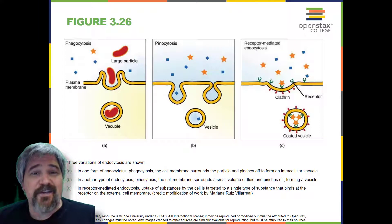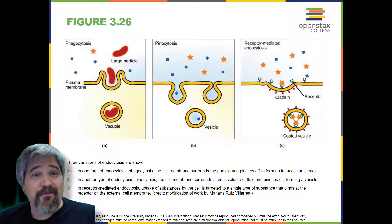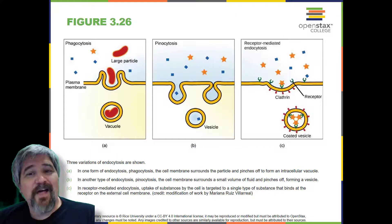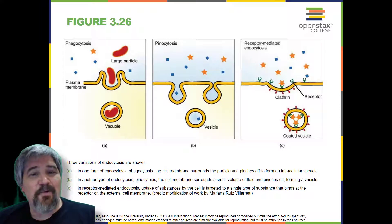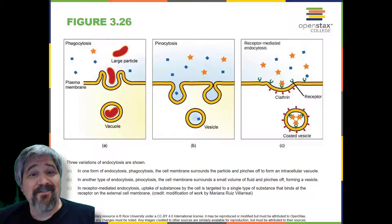A targeted variation of endocytosis employs binding proteins in the plasma membrane that are specific for certain substances. The particles bind to the proteins, and the plasma membrane invaginates, bringing the substance and the proteins into the cell. If passage across the membrane of the target of receptor-mediated endocytosis is ineffective, it will not be removed from the tissue fluids or blood.